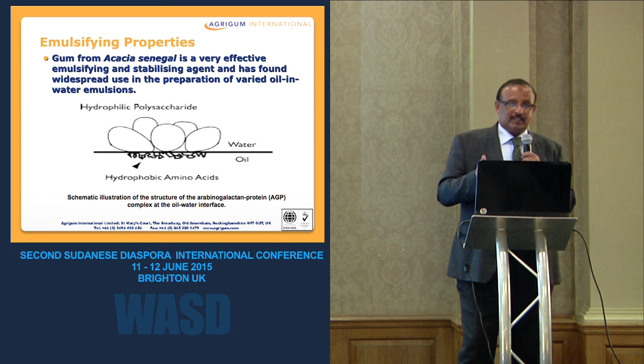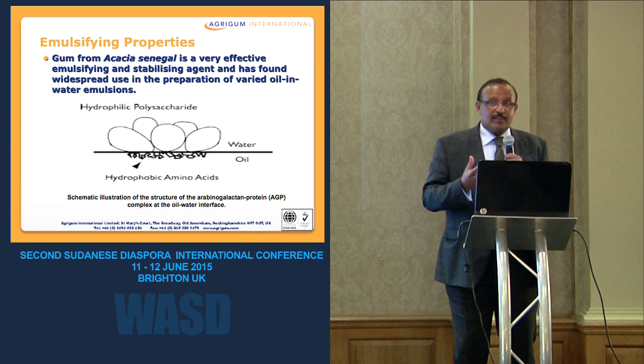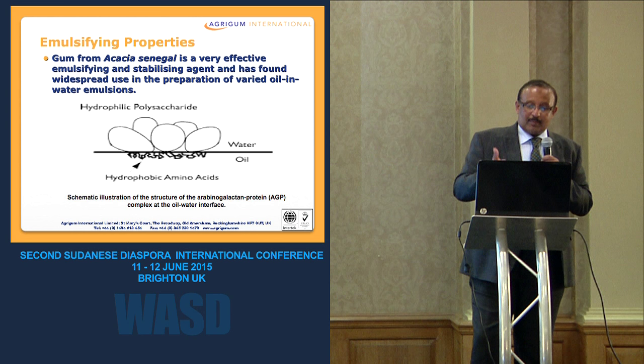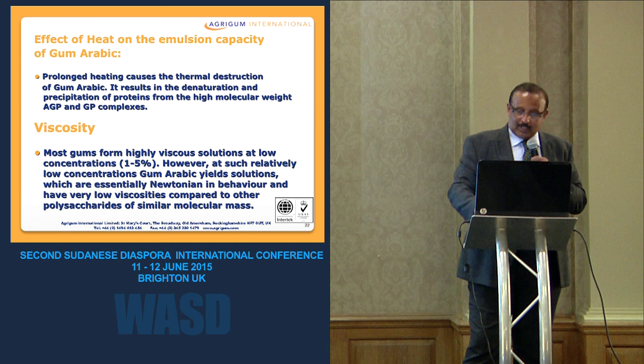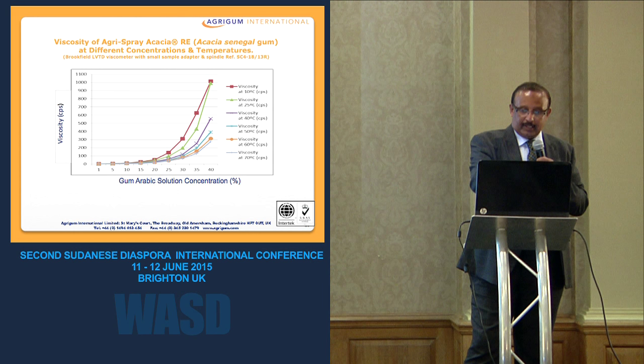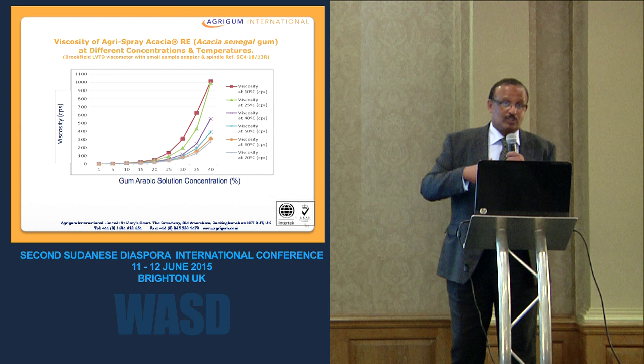The emulsifying property is one of the most important properties — Acacia Senegal has this facility and helps to stabilize flavors, which are mostly oil-based. When you mix oil in water it doesn't mix, so gum Arabic helps to stabilize and create a more uniform emulsion. Heat can damage the emulsion capacity of the gum. Gum Arabic is very low in viscosity: at 25% concentration you get less than 100 cPs, whereas guar gum at 1% gives about 3,000 to 5,000 cPs — a huge difference.